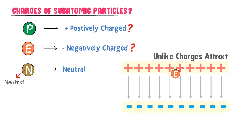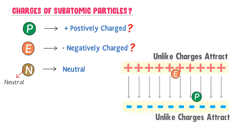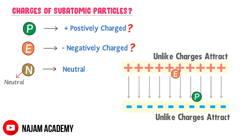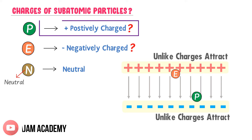Secondly, when we place a proton in this electric field, we observe that the proton always moves towards the negative plate. Since unlike charges attract, the proton must be positively charged. Thus, the proton is a positively charged particle.